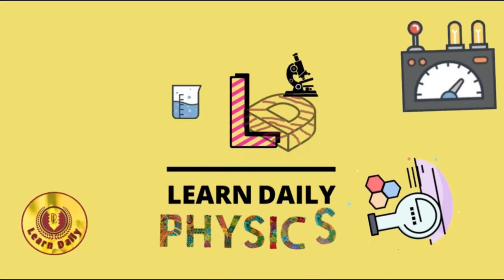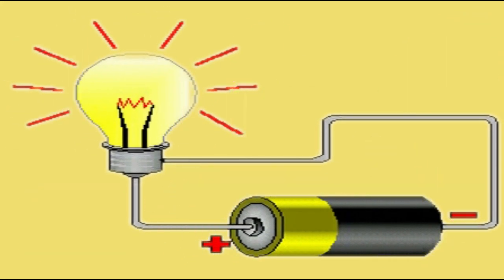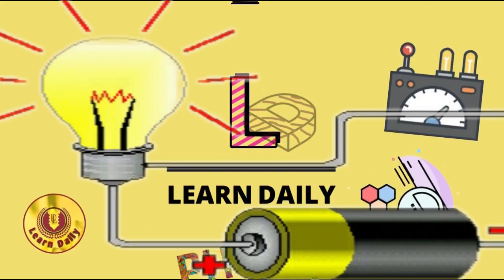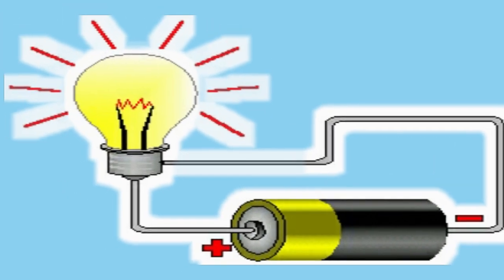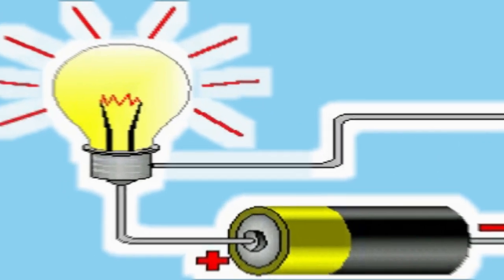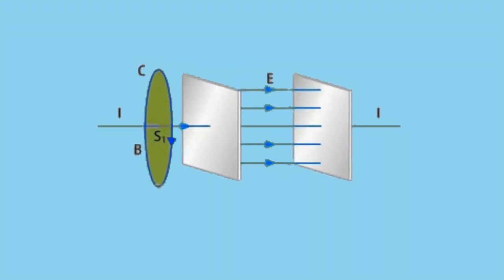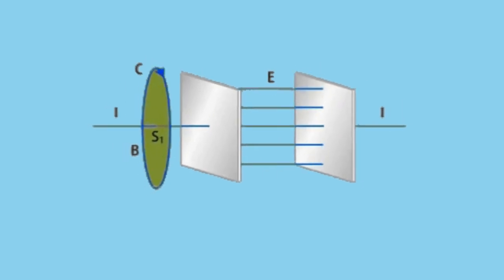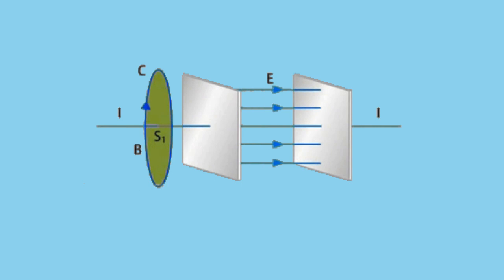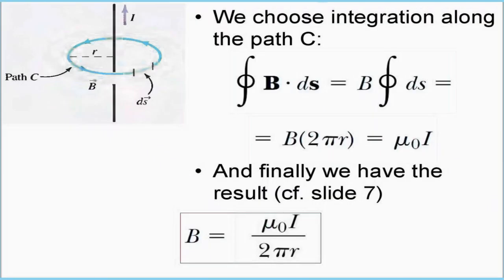So you can see in the conduction current that there is a conduction in its name. It means that this current is because of conduction. When the current flows to any conductor this conduction current occurs. This conduction current is simply a current flowing through any conductor. There is no science about that and it's given by the Ampere's law.